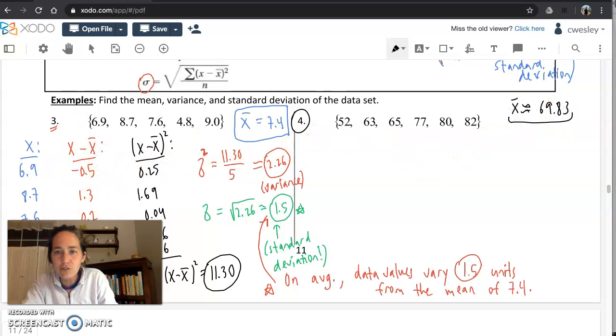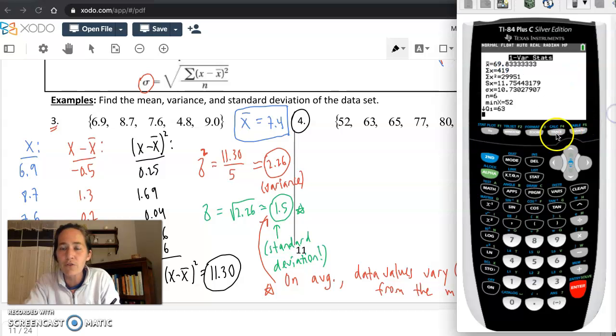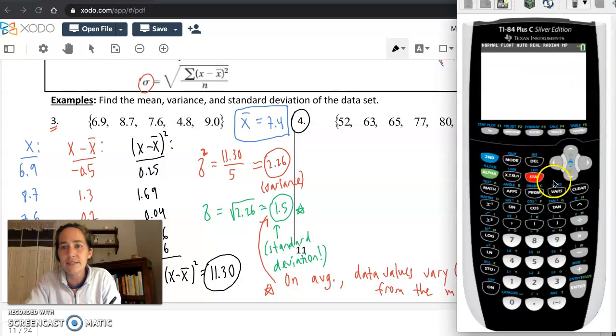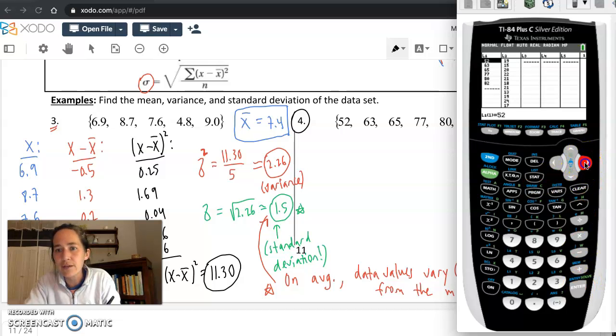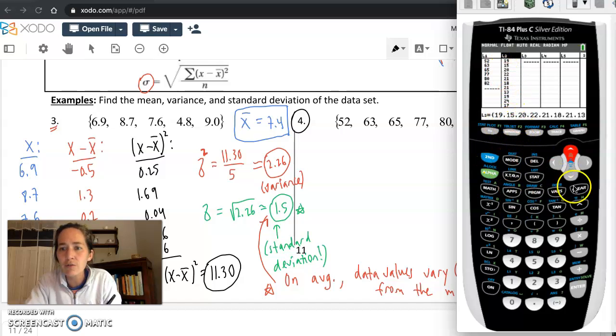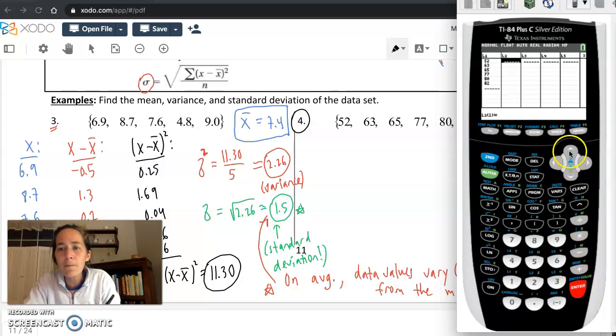Step two was you took each of those values and you subtracted the mean from them. Well, there's a cool shortcut on your lists. I can go back to stat and then go to edit. And what I'm going to do is, I'm going to call L2, I'll clear L2, enter, and I'm going to go up and highlight the name of the column. And then you're going to set, see how it says L2 equals at the bottom. You're going to say L2 equals second and one. So equals L1 minus what? We'll say minus the mean 69.83. What that'll do when you hit enter, it's voila. It just subtracts all the values for you. So hit enter. It'll subtract 69.83 from every single one of the values.